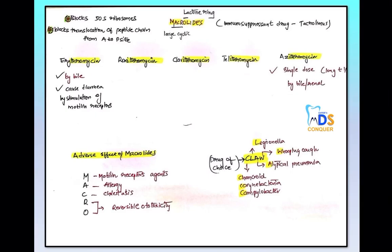The uses of macrolides can be remembered by CLAW: C stands for Chancroid, Corynebacterium, and Campylobacter; L stands for Legionella; A stands for Atypical pneumonia; and W is for Whooping cough or pertussis. If asked for the drug of choice for pertussis or Corynebacterium, the answer is macrolides.